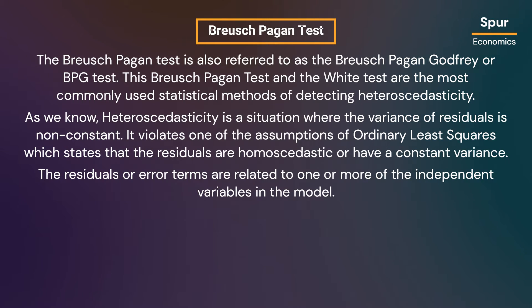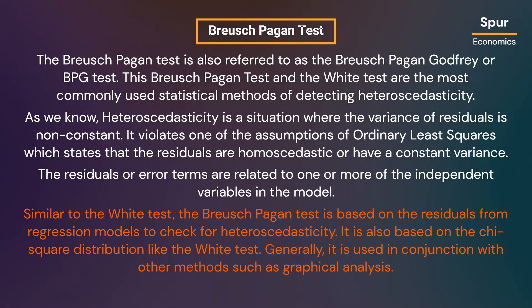The residuals or error terms are related to one or more of the independent variables in the model. Similar to the White test, the Breusch-Pagan test is based on the residuals from regression models to check for heteroscedasticity. It is also based on the chi-square distribution like the White test, and generally it is used in conjunction with other methods such as graphical analysis.